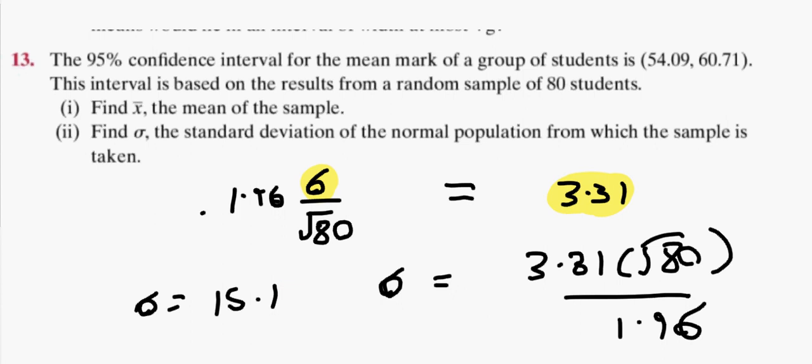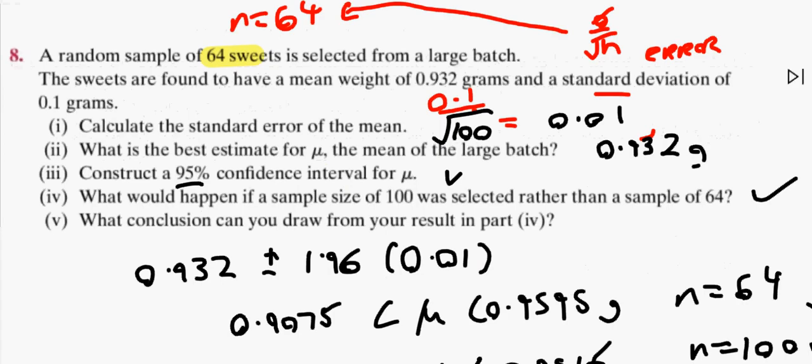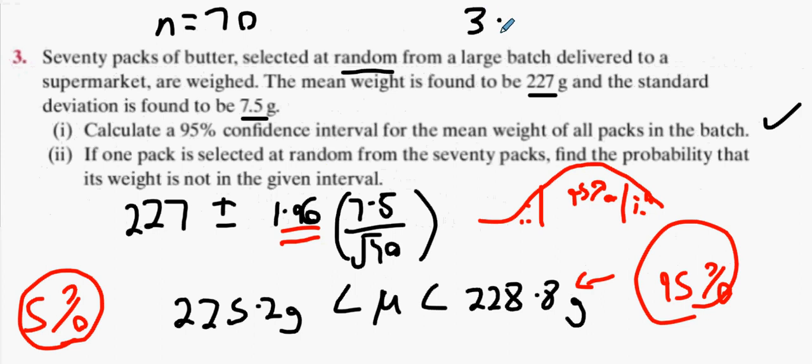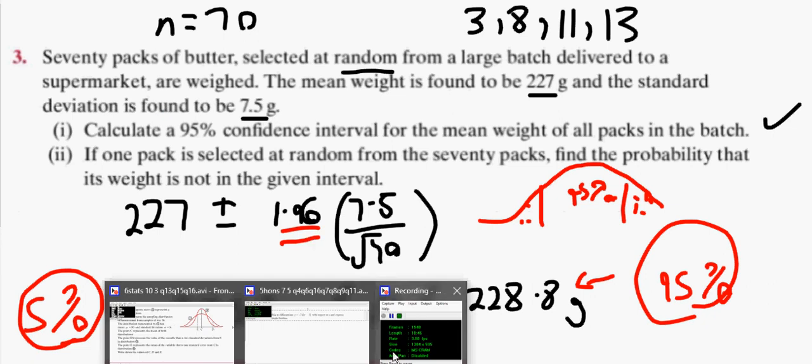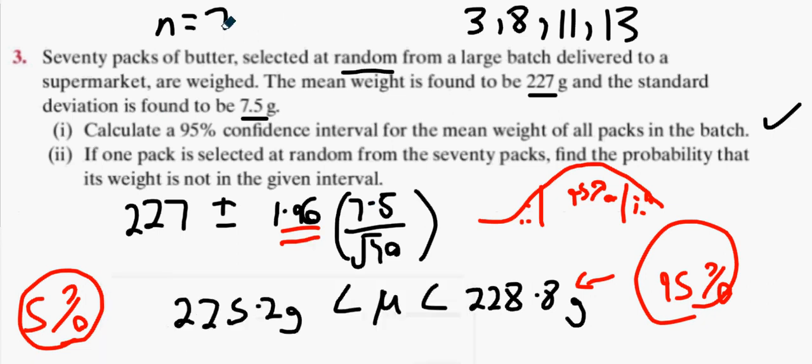All right, so I did 13, 11, 3, 8, 11, 13. Do you guys reckon you'll be all right doing questions 4, 7, 10, and 12 tonight? Should be all right. It's easy enough isn't it?